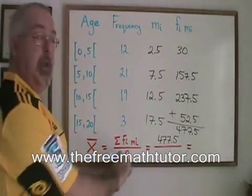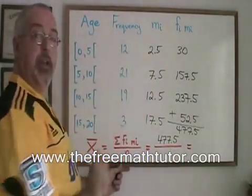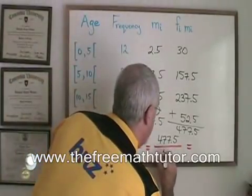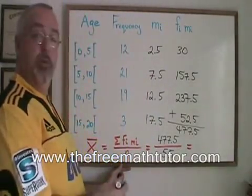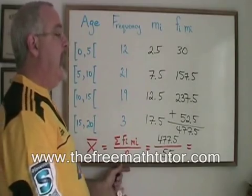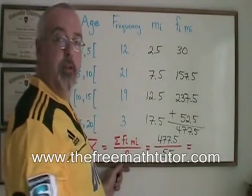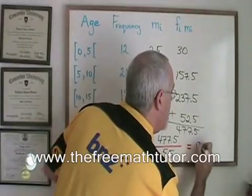And is divided by n, the sample size, which in this case is 55. When I divide 477.5 by 55, I get a value which rounds off to the nearest hundredth to 8.68.